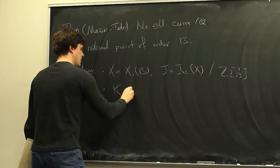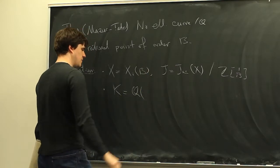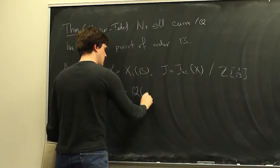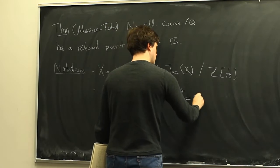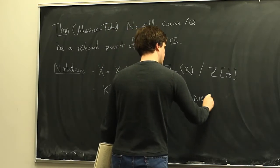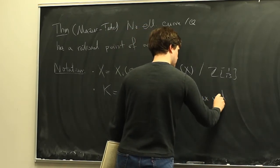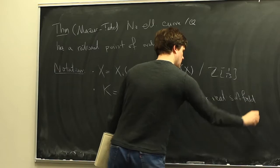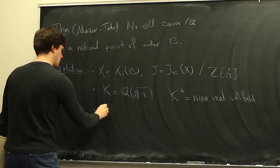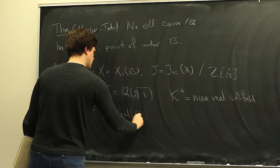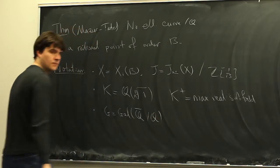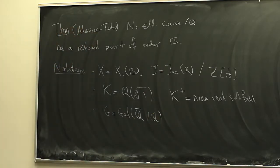K is going to be the field obtained by adjoining 13 roots of unity, K⁺ its maximal real subfield, and G the absolute Galois group of Q.